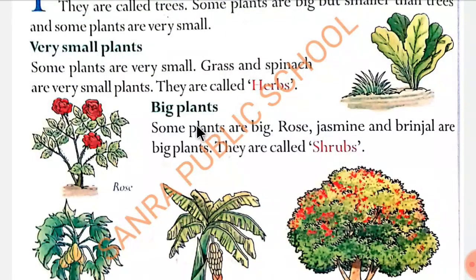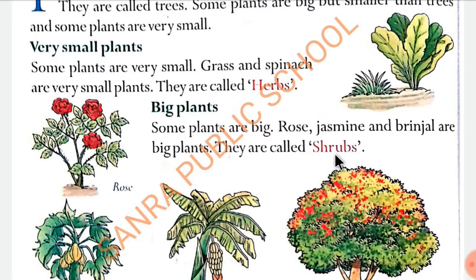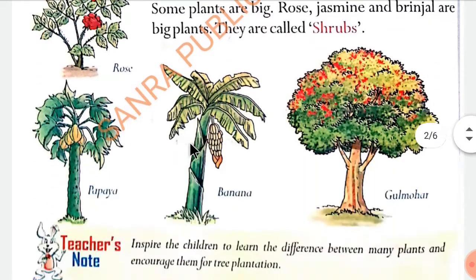Big plants — bade podhe. Some plants are big, kuch bade podhe hote hai. Rose, jasmine and brinjal are big plants. These are called shrubs — in ko shrubs kaha jata hai. Jo plants grass se thode bade hain jaise rose plant, woh shrub bolaya jayega.